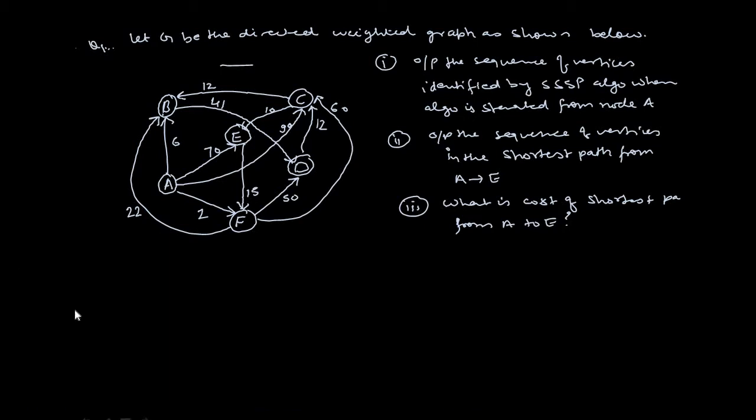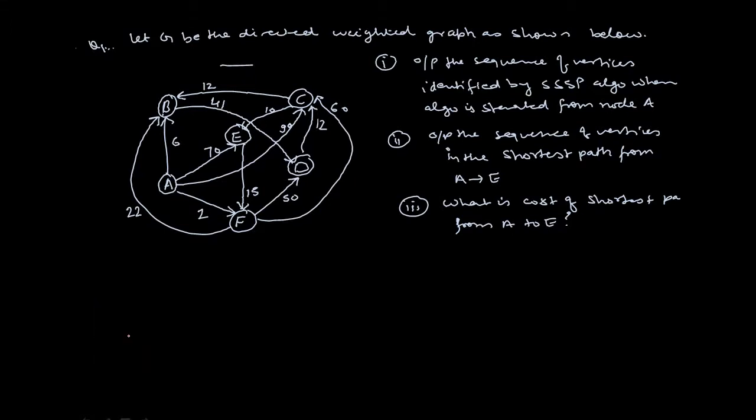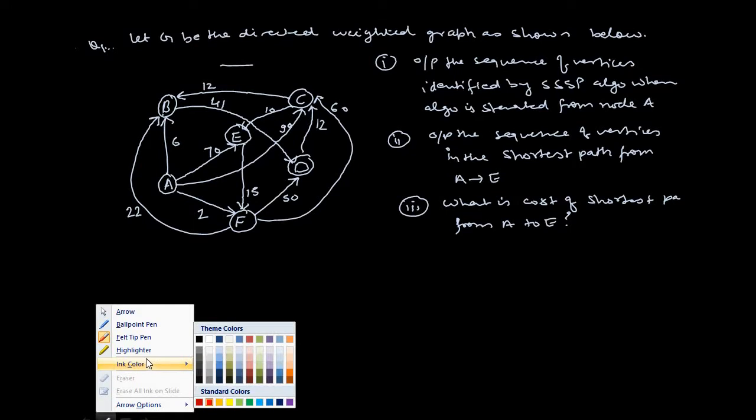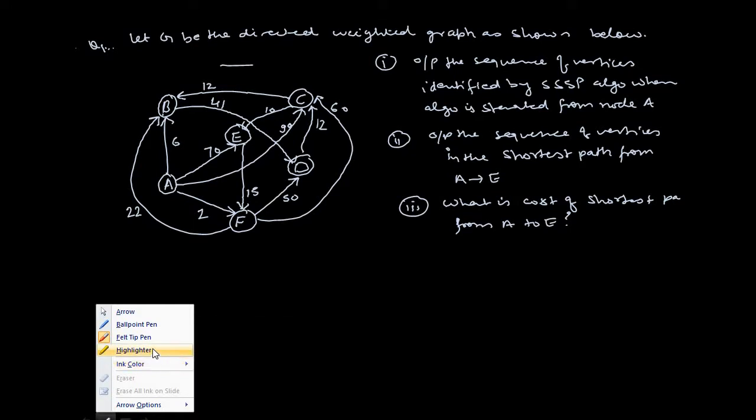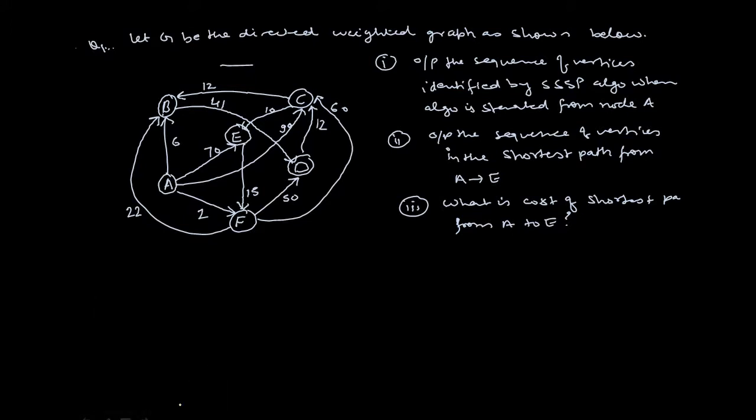Now let's solve the questions based on Dijkstra's algorithm. I just read out the question for you. Let G be a directed weighted graph which is shown in this figure. We need to find out the output of the sequence of vertices identified by the single source shortest path algorithm when the algorithm is started from node A. The starting vertex is node A. We need to find out the output of sequences of the vertices in the shortest path from A to E.